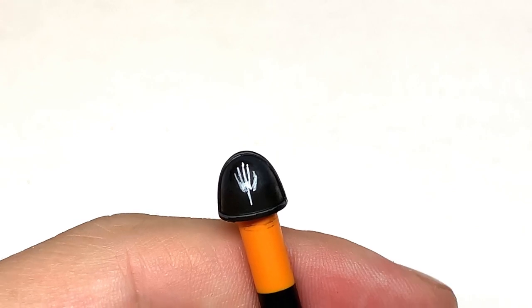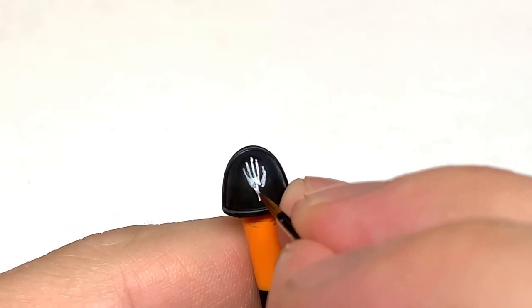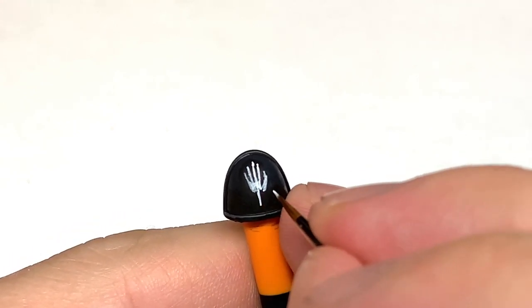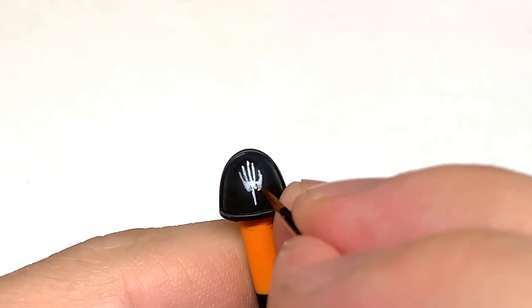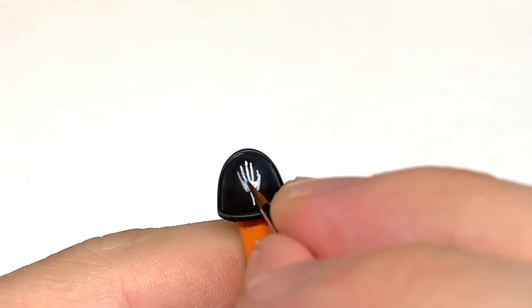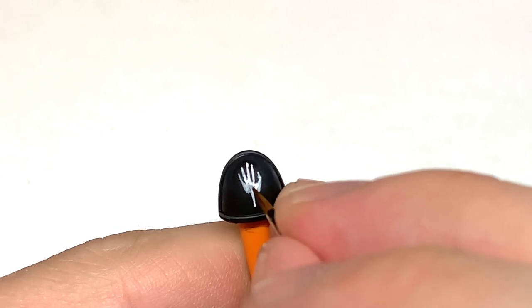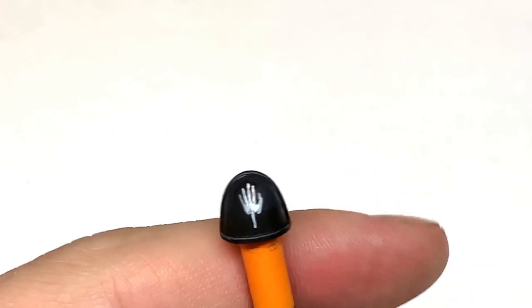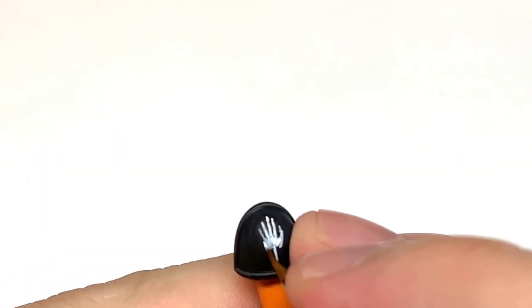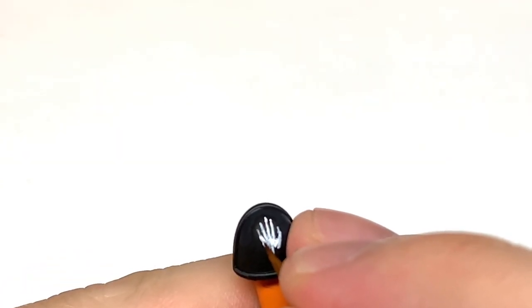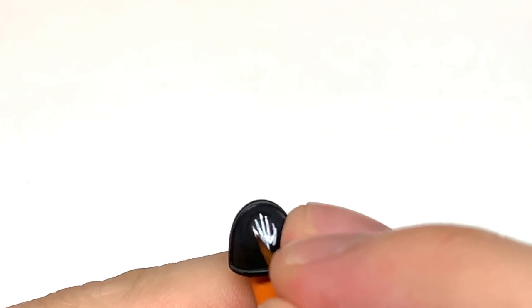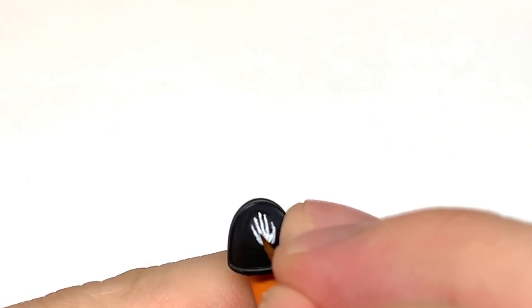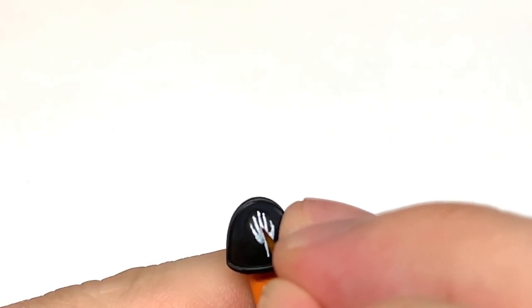Then we will fill in where the palm is and start doing that splayed section at the bottom where you get that angular base to the glove. Now ordinarily you'd have different shades of dark grey on the top of the pauldron, but on this I'm just working with pure black as it isn't actually on the miniature.